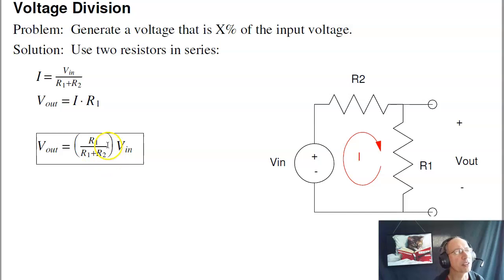This is Voltage Division. This is the percentage of Vin that you see at Vout. It's what you're measuring, R1, divided by the total.